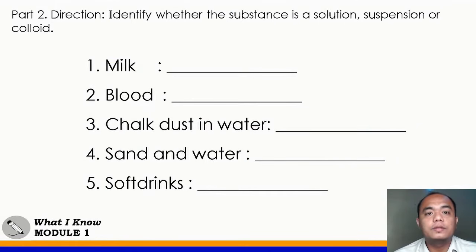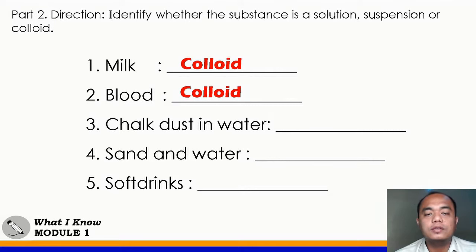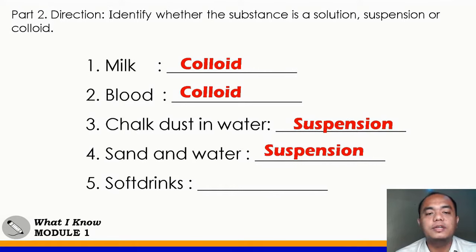Part 2. Identify whether the substance is a solution, suspension, or colloid. Number 1: milk — colloid. Number 2: blood — colloid. Number 3: chalk dust in water — suspension, because chalk dust cannot be dissolved in water. Number 4: sand and water — suspension. Number 5: soft drinks — solution. Very good!